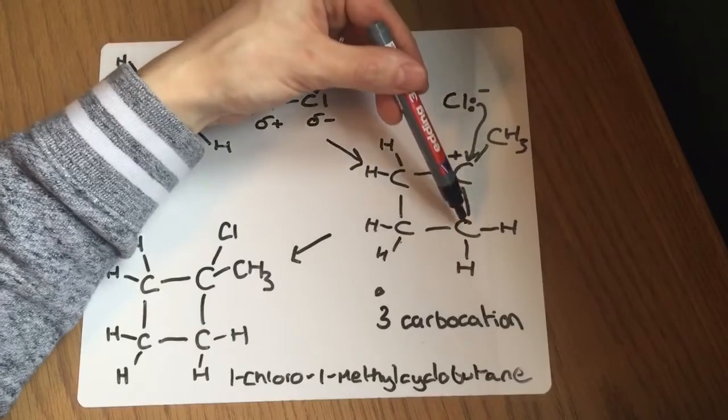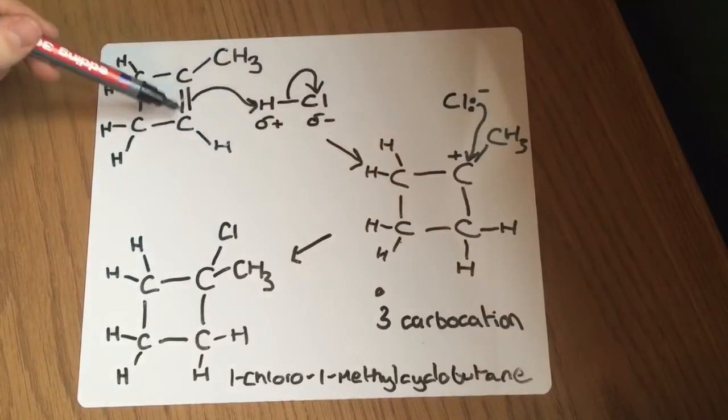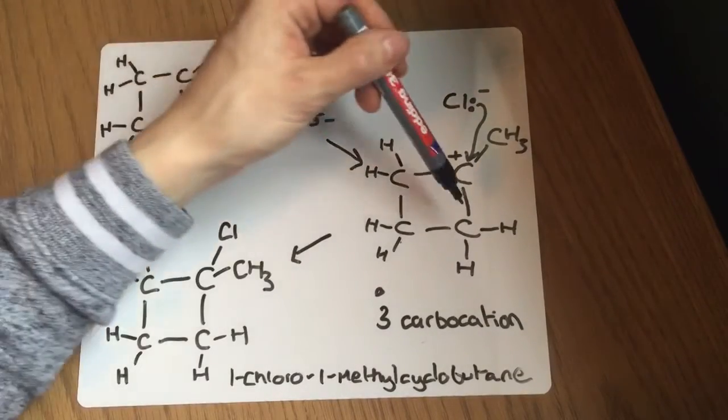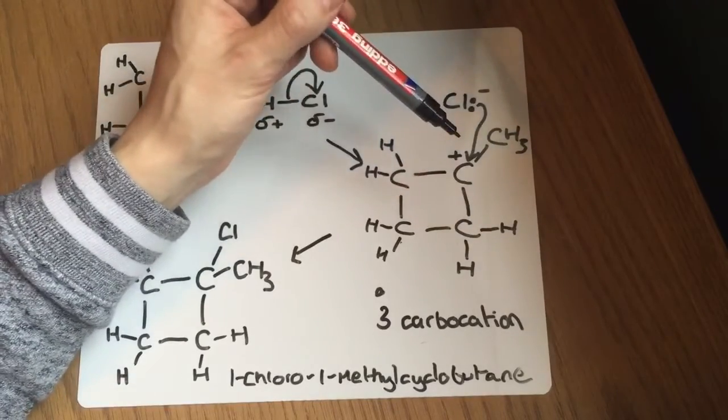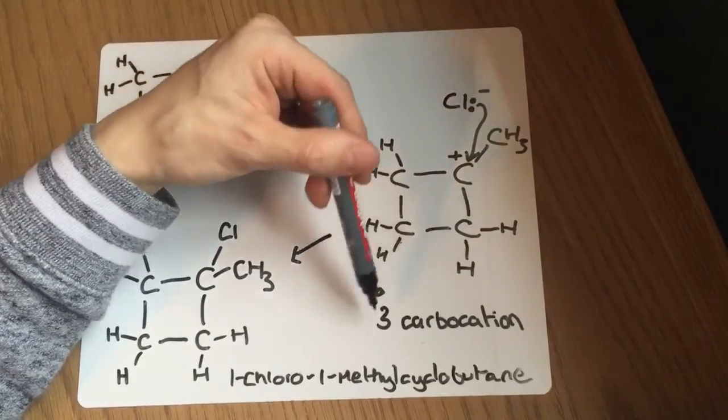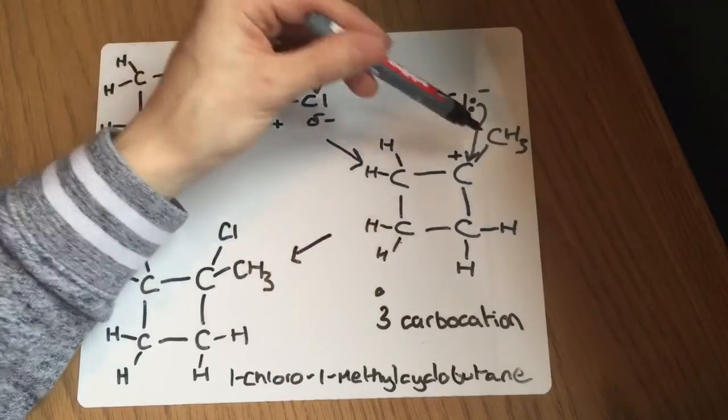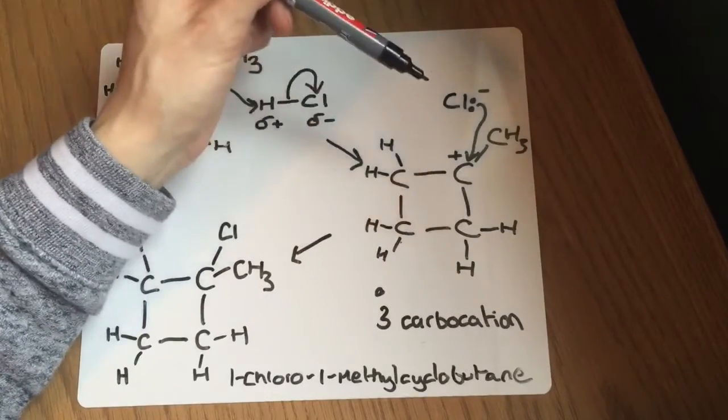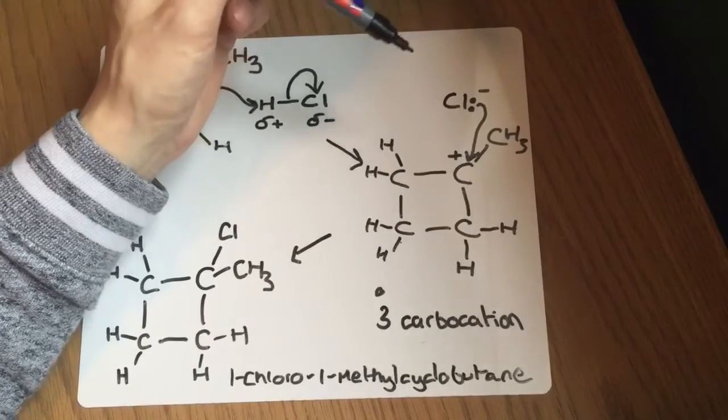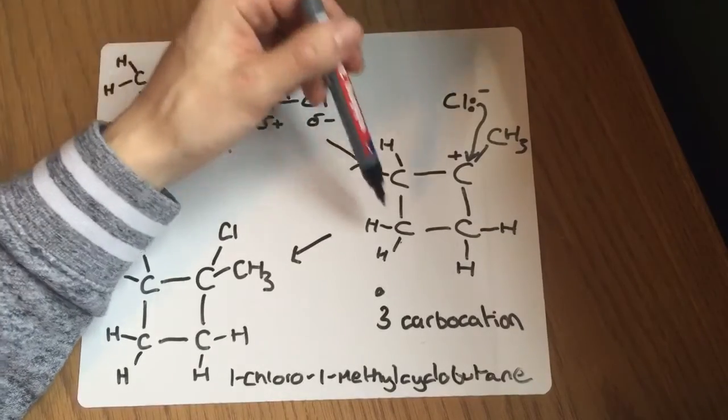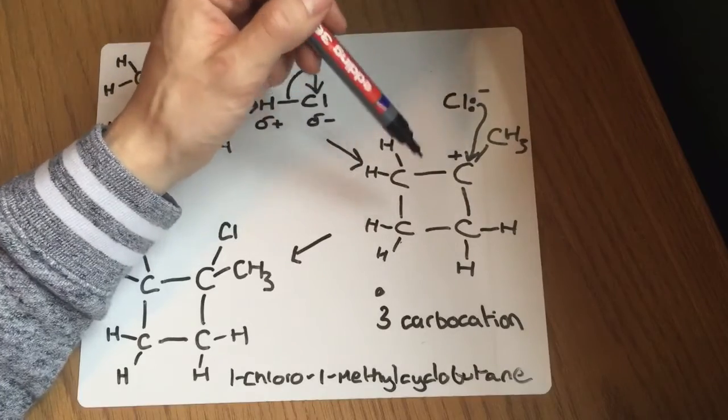I did have a choice of making this carbon from the original double bond the carbocation, but this carbocation would have only been a secondary, and a tertiary carbocation, one with three carbon containing groups around it, is more stable. And so if we're trying to make the major product, we need to show the intermediate which was more stable.